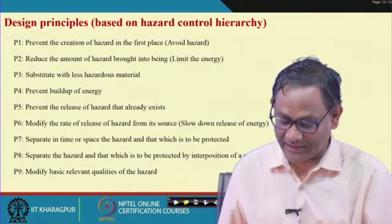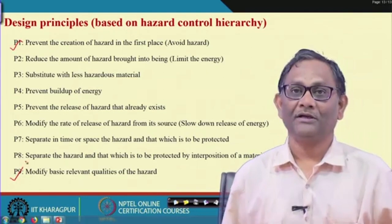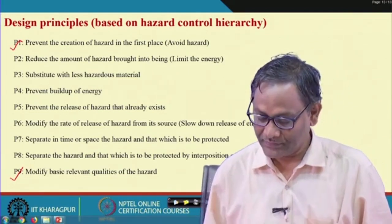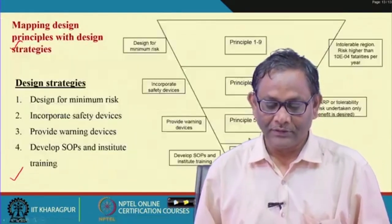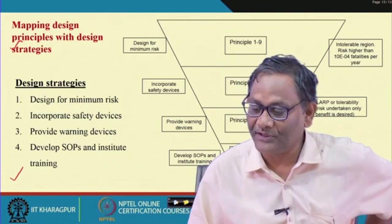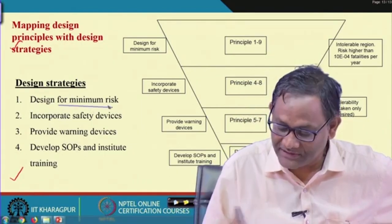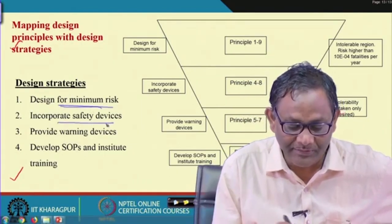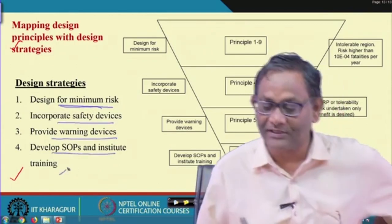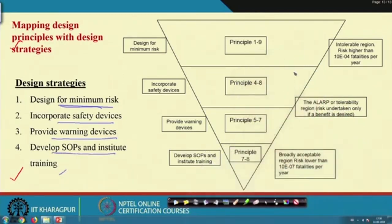Now use the hazard control hierarchy principles. All nine principles P1 to P9 have been discussed previously. For risks in the ALARP zone there will be different strategies: design for minimum risk, incorporate safety devices, provide warning devices, SOPs, training. These nine principles are mapped to the strategies, and depending on your strategy you select which principles to use.